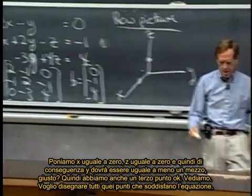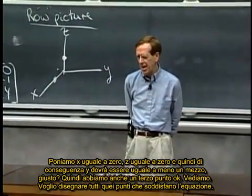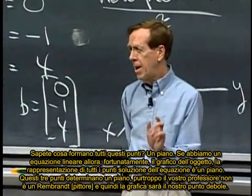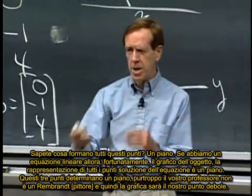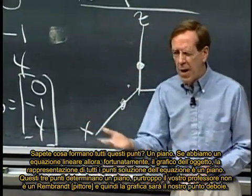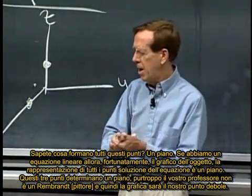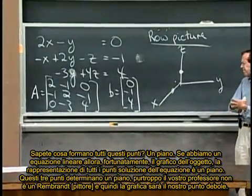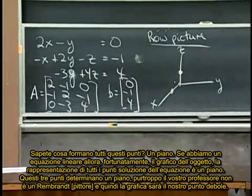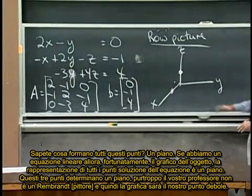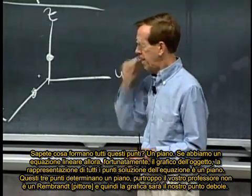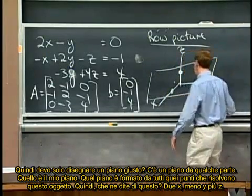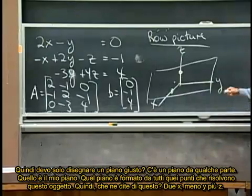I want to put in all the points that satisfy that equation. Do you know what that bunch of points will be? It's a plane. If we have a linear equation, then fortunately the graph of the thing, the plot of all the points that solve it, is a plane. And these three points determine a plane, but your lecturer is not Rembrandt and the art is going to be the weak point here. So I'm just going to draw a plane, right? There's a plane somewhere, that's my plane.